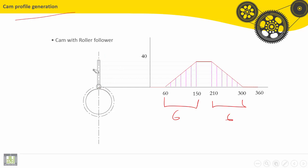After that, here we have axis of the cam. This circle with the maximum stroke of the follower.